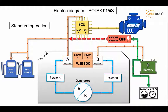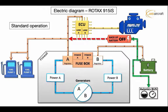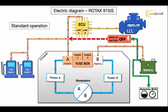Under normal operations, generator A powers regulator A, which then flows into fuel pump 1, fuel pump 2, and then the ECU. On this diagram underneath the ECU you see lane A and lane B — these have nothing to do with the generators themselves but we'll cover that in another video. So again, generator A is responsible for keeping the engine running. This is the sole duty of generator A.